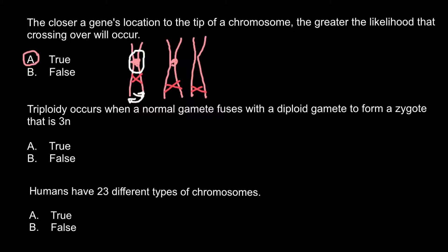So we can say that in general, the closer a gene is to the tip, the greater the chances that it would exchange its location and end up on the other homologous chromosome. And the closer a gene is to the centromere, the more chances that the gene wouldn't participate in crossing over.